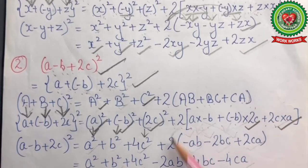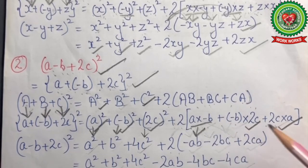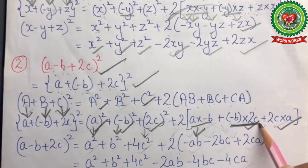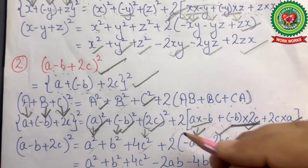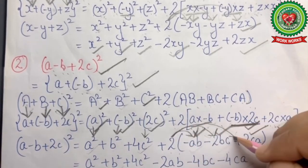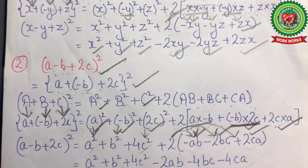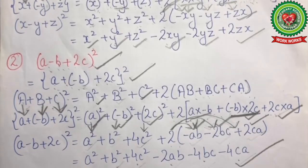Then 2 bracket: a into -b is -ab, -b into 2c is -2bc, and 2c into a is 2ca. Multiplying 2 with all three terms, we get the final answer as a² + b² + 4c² - 2ab - 4bc + 4ca.